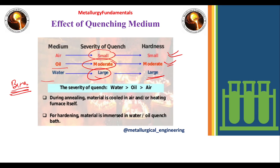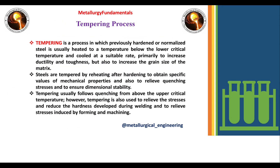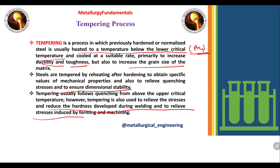Tempering is a process in which previously hardened or normalized steel is usually heated to a temperature below the lower critical temperature — which in steel is Ac1 — and cooled at a suitable rate, primarily to increase the ductility and toughness of the material and also to increase the grain size of the matrix. Steels are tempered by reheating after hardening to obtain specific values of mechanical properties, to relieve quenching stresses, and to ensure dimensional stability. Tempering usually follows quenching from above the upper critical temperature, but it is also used to relieve stresses and reduce hardness developed during welding and to relieve stresses induced by forming and machining.